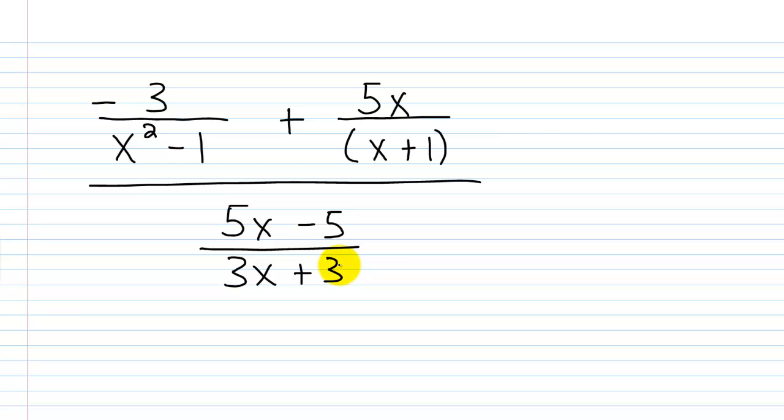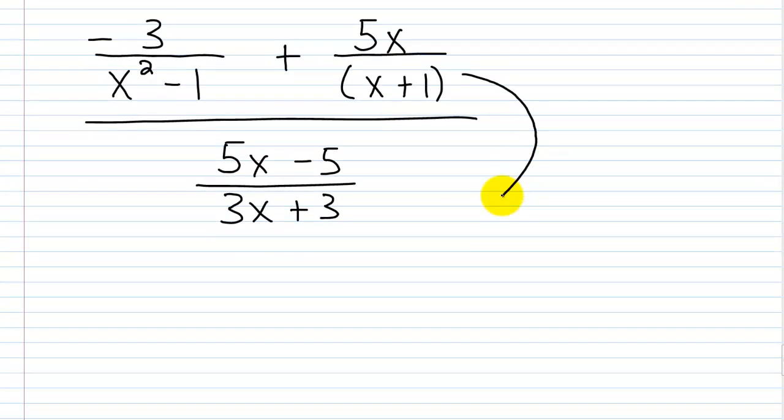So what we need to simplify basically is just this numerator up here because we have this addition. All right, once we've simplified this numerator, we can just perform the main division.